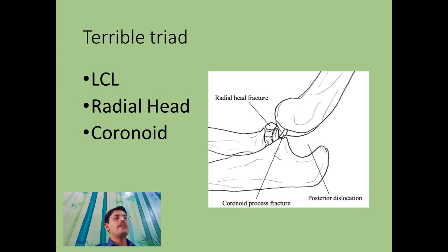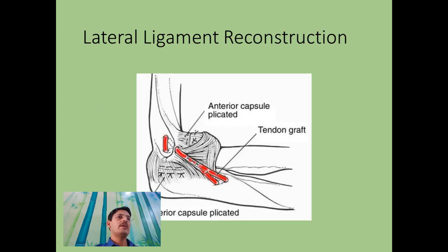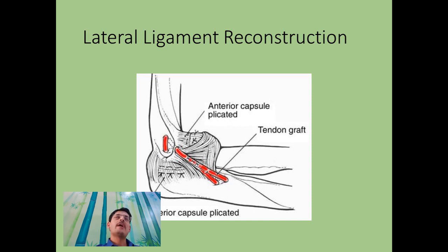The lateral ligament can be addressed through standard lateral ligament reconstruction, done in chronic cases. In cases with grade one or grade two rotatory instability without severe disruption, an anchor repair can also be used — placing an anchor on the lateral side of the humerus and passing sutures through the lateral ulnar collateral ligament, which usually takes care of the problem.